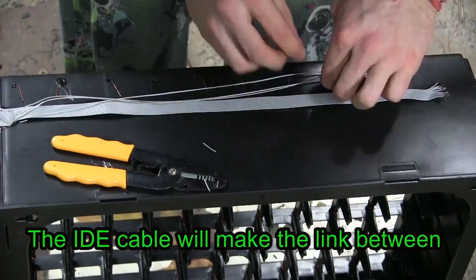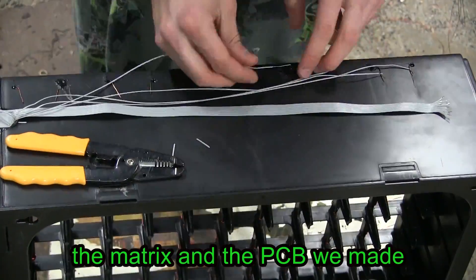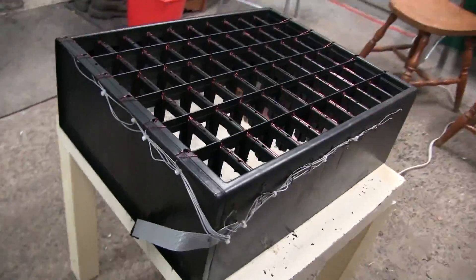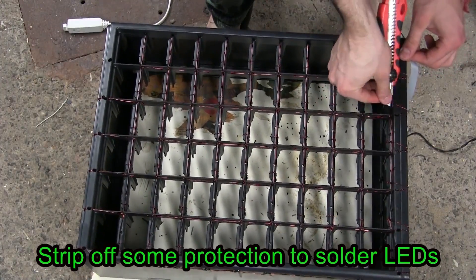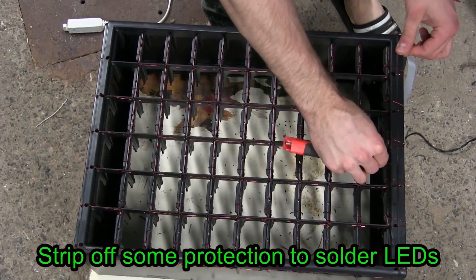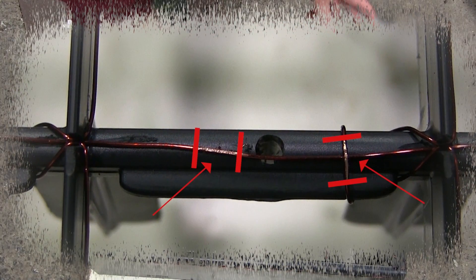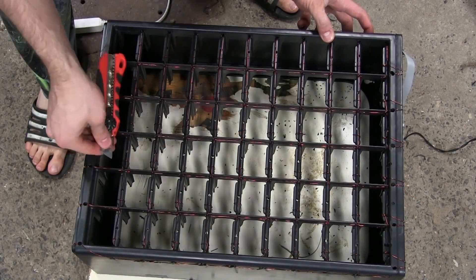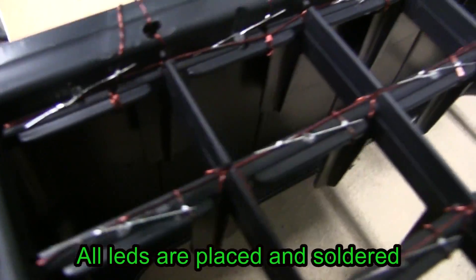Remove the protection from the XY connections. The IDE cable will make the link between the matrix and the PCB we made. Strip off some protection to solder LEDs. All LEDs are placed and soldered.